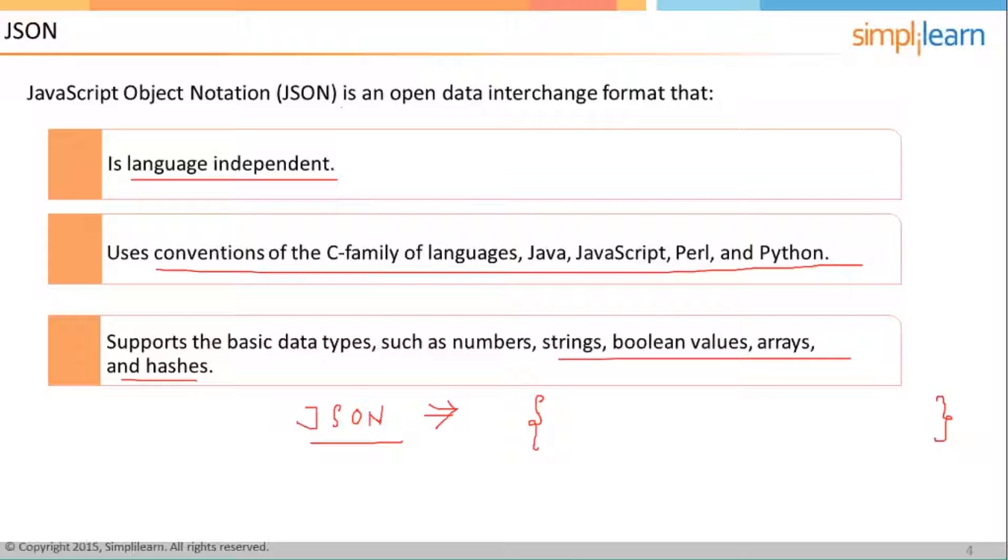So what I want to say is a JSON will look something like this. So I can write over here name is Summit and age is say X. So what you see over here is that I have a key and a value.